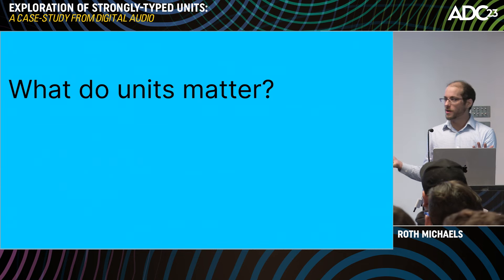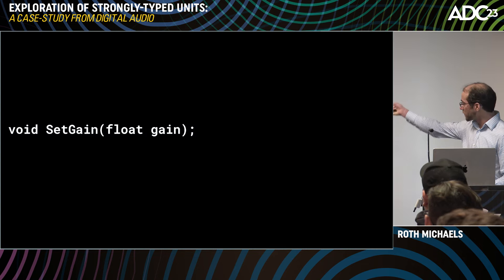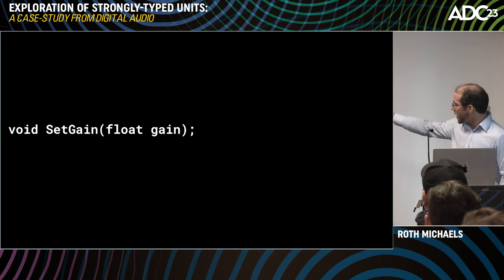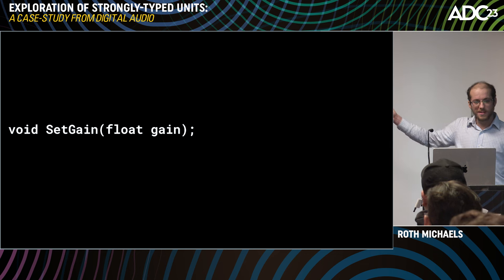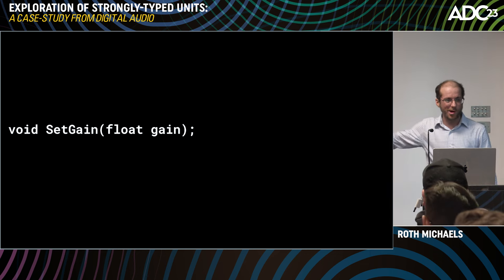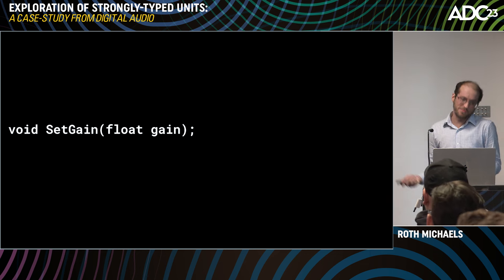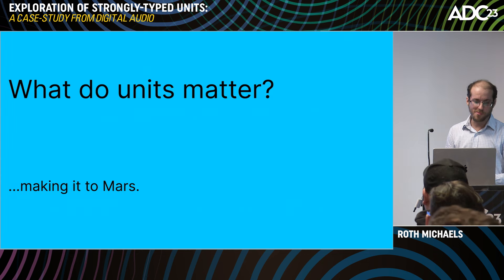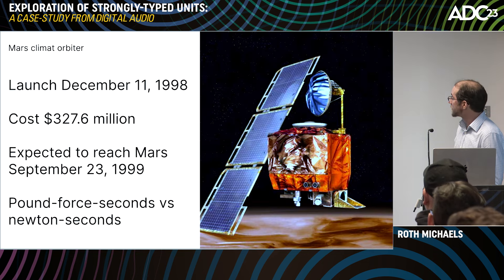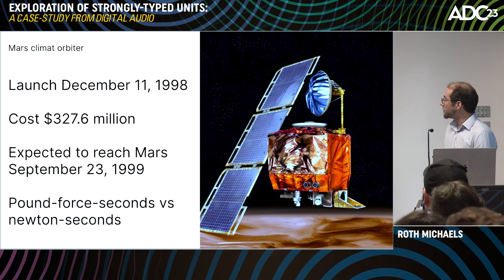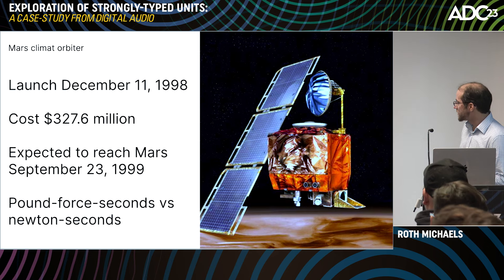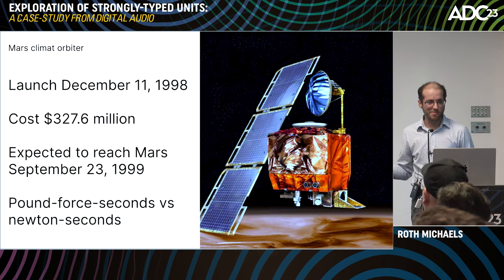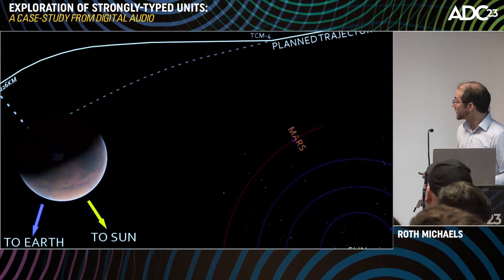So why do we care about units in our code? Here's a simple example — this is not a great API. Is this gain in decibels or zero to one? Maybe there's a comment, maybe it says 'gain dB,' but you probably have to look at the code to find out. That, in a nutshell, is why we need units. The classic example is crashing really expensive Mars landers by mixing up imperial and metric — in this case, pounds-force seconds versus newton seconds — which caused a mistake and it ended up missing Mars instead of landing on it.